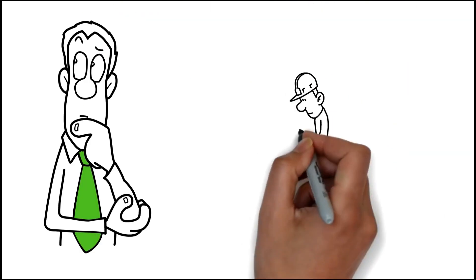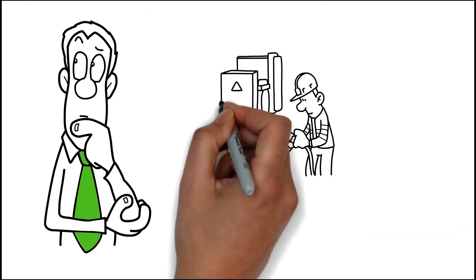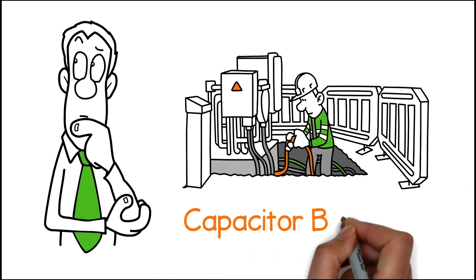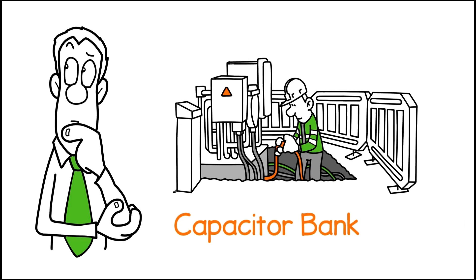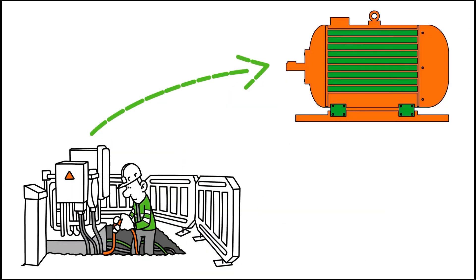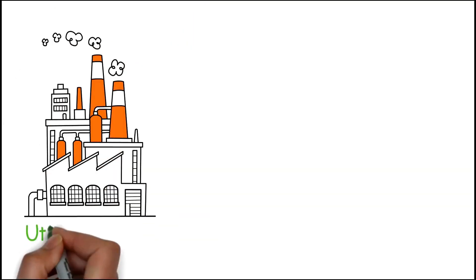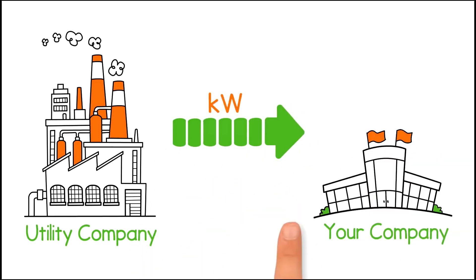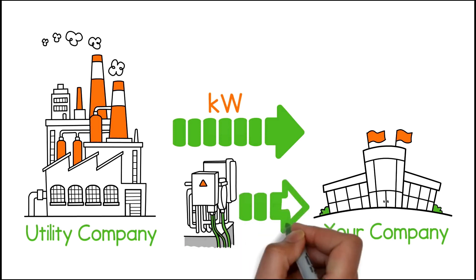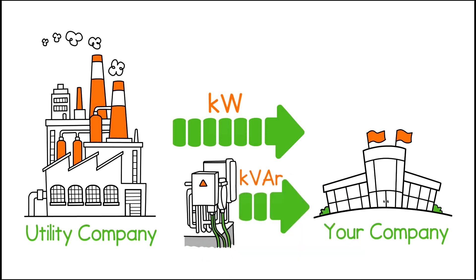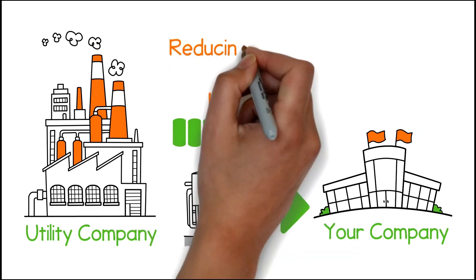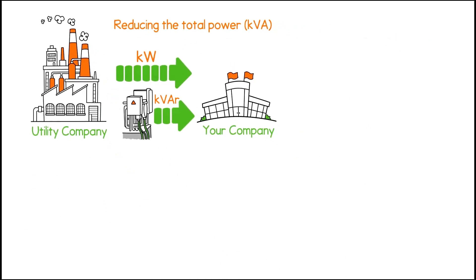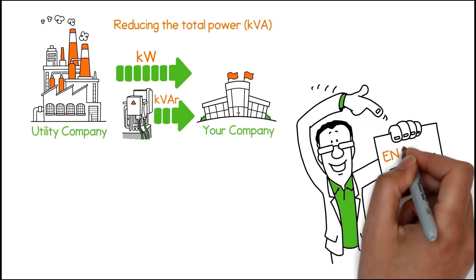How do you get rid of this charge? By installing a custom-designed power factor correction system, also known as a capacitor bank. These temporary storage units provide reactive power to your motors instead of receiving it from the utility company. Both kilowatts and KVAR come from the utility. When a capacitor bank is installed in your facility, it replaces the reactive power supplied by the utility, thus reducing the total power — KVA — delivered to your facility. Reduced power from the utilities equals reduced costs.